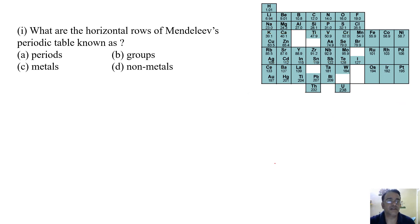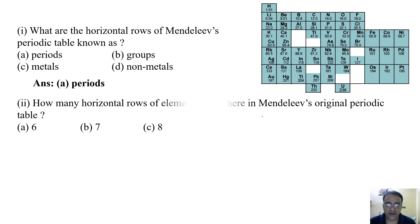How many horizontal rows of elements were there in Mendeleev's original periodic table, the old one? We can count the number of rows - the correct answer is 7.